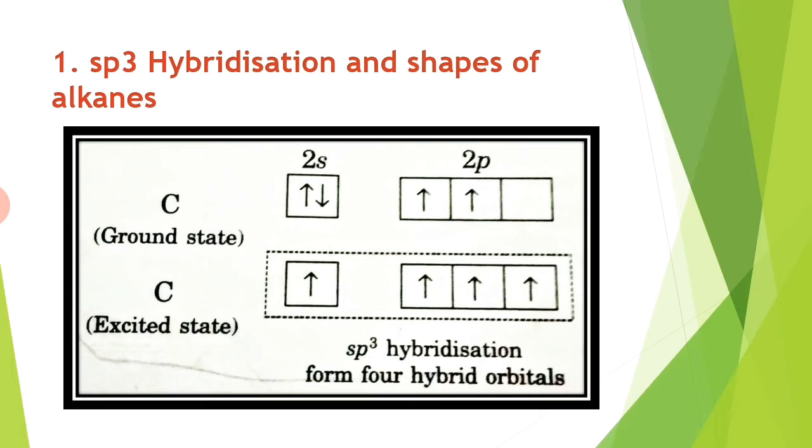We know all about the carbon atom forms four equivalent bonds because of hybridization of its valence orbitals, and this can explain the shapes of organic molecules. Carbon atoms in alkanes involve sp3 hybridization. When bonds are formed, energy is released and the system becomes more stable.